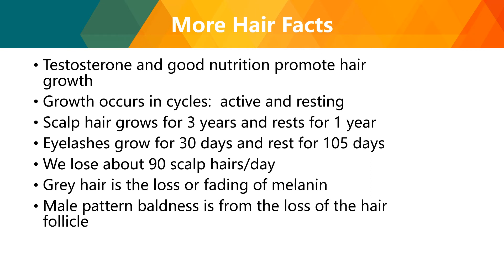More hair facts: testosterone and good nutrition promote hair growth. Growth occurs in cycles of active and resting stages. Scalp hair grows for three years and rests for one year. Eyelashes grow for 30 days and rest for 105 days. We lose about 90 scalp hairs per day. Gray hair results from the loss or fading of melanin, which comes with aging, as cells lose the capability to produce melanin normally. Male pattern baldness results from loss of the hair follicle.